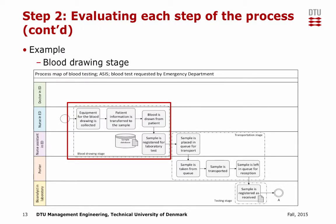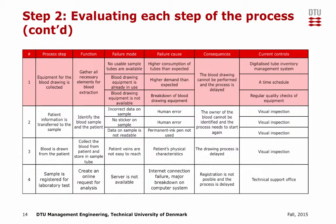This is the process map where the blood drawing and transportation stages are shown. The blood drawing stage consists of four process steps: first, equipment for blood drawing is collected; second, patient information is transferred to the sample; third, blood is drawn from the patient; and fourth, the sample is registered for a laboratory test. The evaluation is done through a table where the process steps, functions, failure modes, failure causes, consequences, and current controls are defined. Current controls are tests, procedures, or mechanisms in place in the existing process to detect the occurrence of failures.